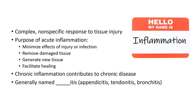While acute inflammation is vital to our response to injury or infection, chronic inflammation contributes to the development of chronic diseases such as cardiovascular disease or cancer. Inflammatory disorders are often named ending in '-itis,' such as appendicitis — inflammation of the appendix — tendinitis — inflammation of a tendon — or bronchitis — inflammation of the bronchi.